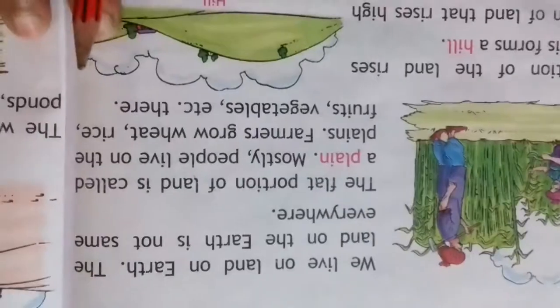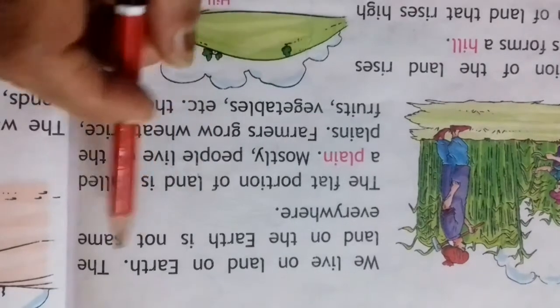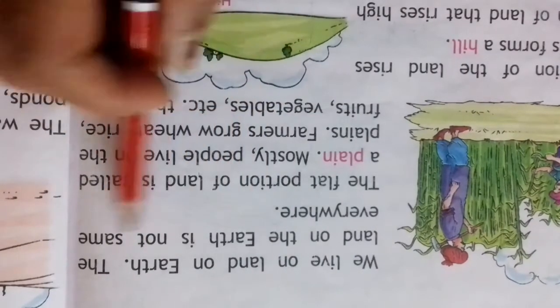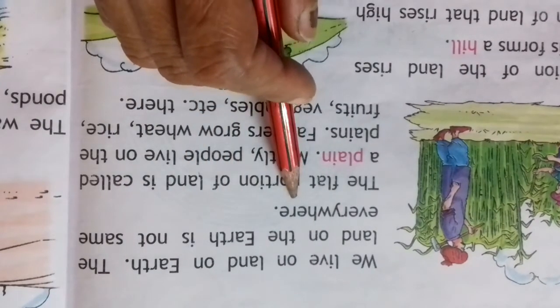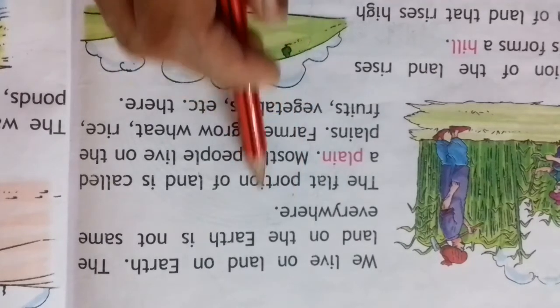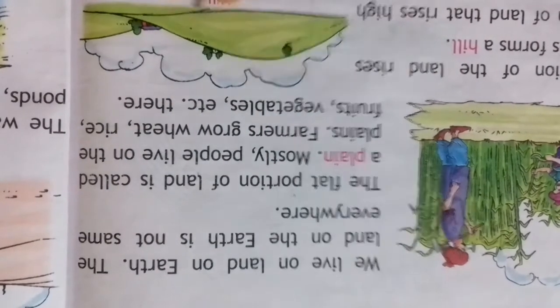Land. We live on Earth. The land on Earth is not the same everywhere. It is different types of land.